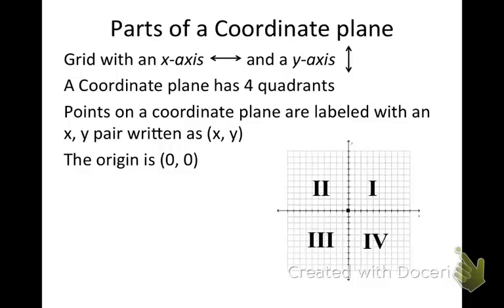When you plot points on a coordinate plane, they are labeled with an x-y pair, and we usually put them in parentheses like this. The origin — this point right here — is always (0, 0). Just a quick review over that.